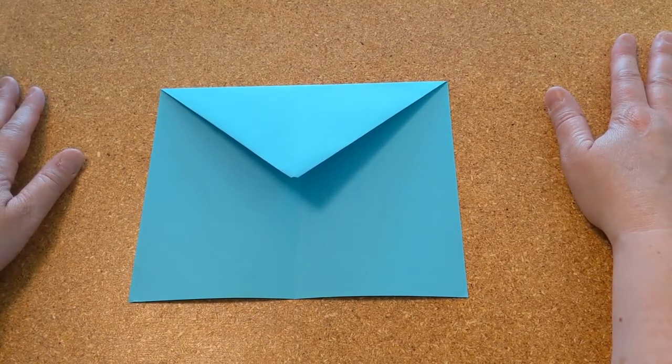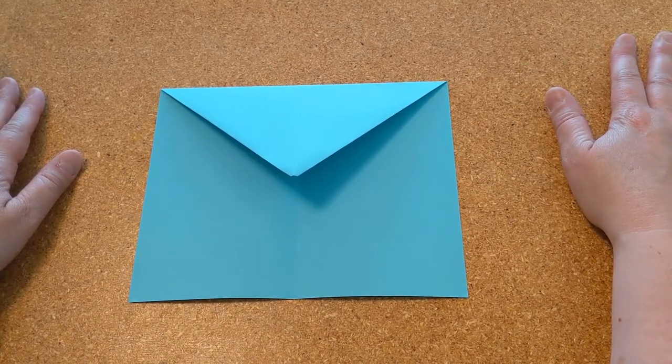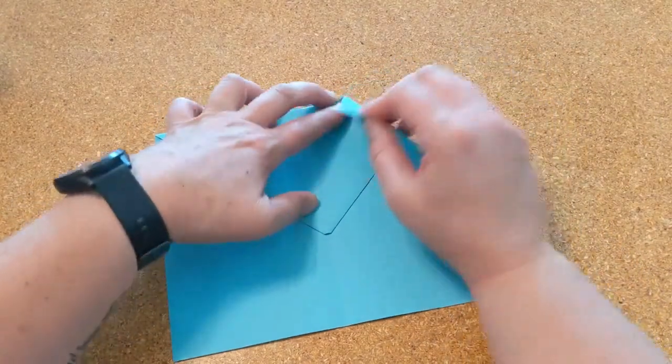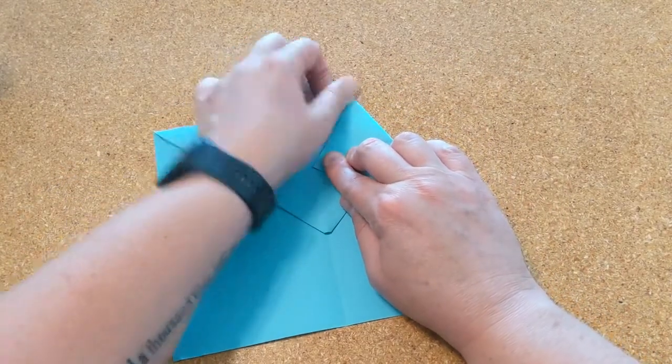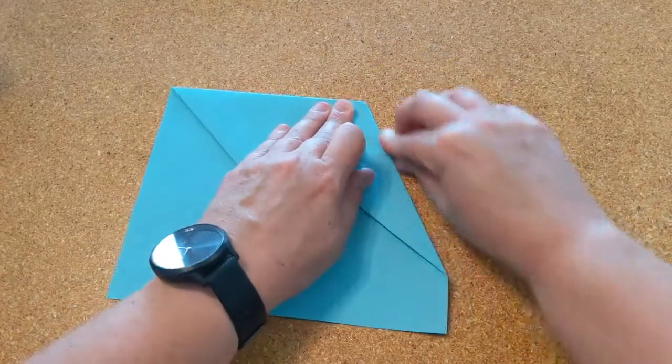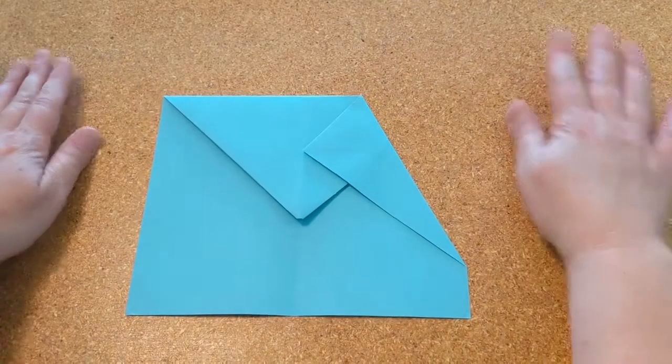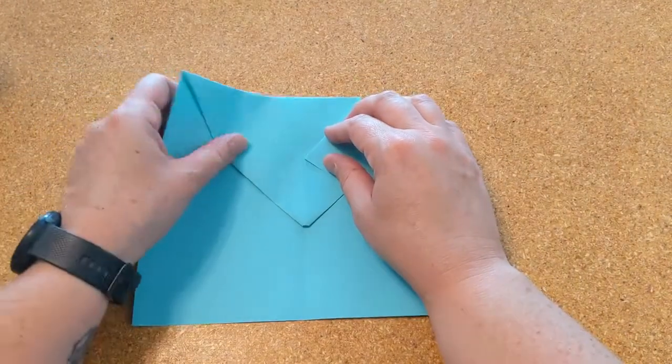The next thing we're going to do is we're going to fold the top right corner to the center about one inch above the tip. Make sure your creases are nice and tight. Make sure you go with one inch above the top point. Then you will do the same thing with the other side.